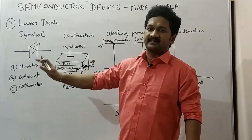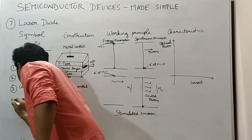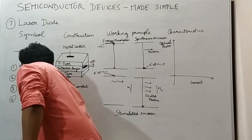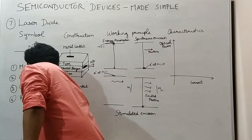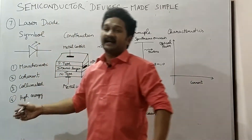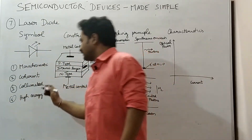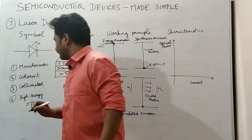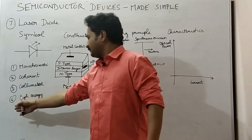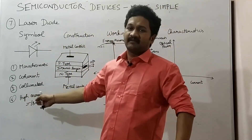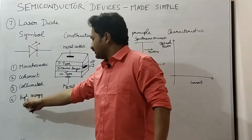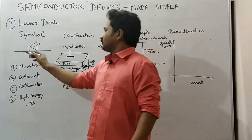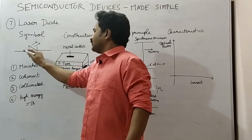The fourth property is high energy. Laser diodes are capable of emitting high energy radiations whose unit is joule per second, so it can be called as optical power whose unit is joule per second. Now let's go to the symbol of the laser diode.